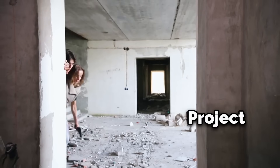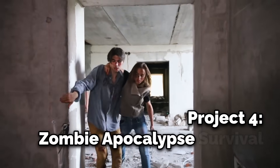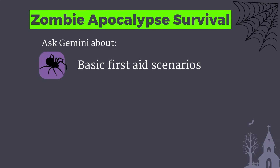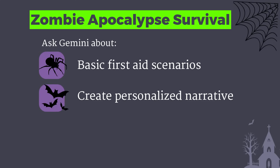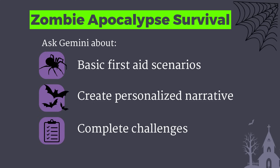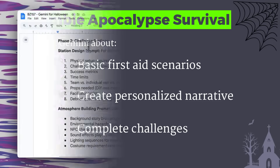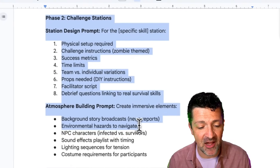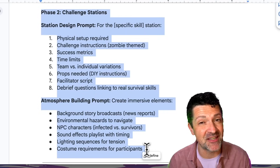Now it's time to get really scary with zombie apocalypse survival training. Prompt it to help you and your family learn basic first aid and emergency survival skills, all tied back into a surviving-the-zombie-apocalypse theme. Then prompt it to create a personalized narrative in which a zombie outbreak has occurred and participants need to complete various challenges to find a cure. There's a ton more in the e-book about all the different stations you can set up and how they tie into specific skills.